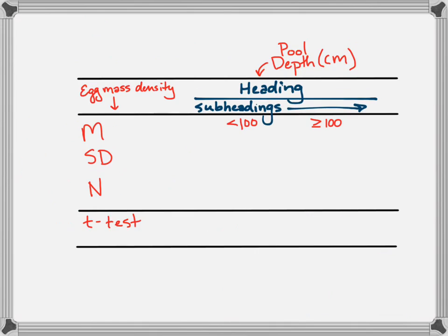This layout for a t-test allows you to compare the means of two groups. Note that my heading and my subheading describe my IV and my IV treatment groups, and egg mass density is listed above the mean, standard deviation, and sample size lines, because it's the DV we're describing in this table.